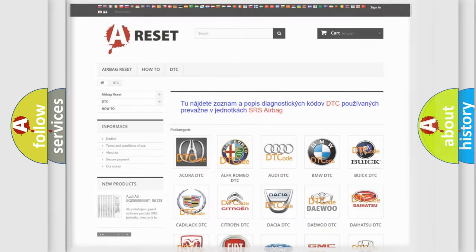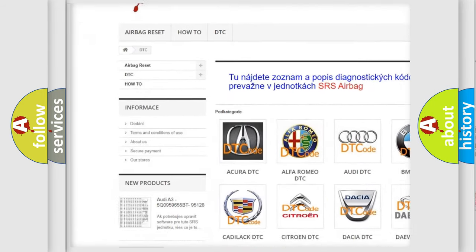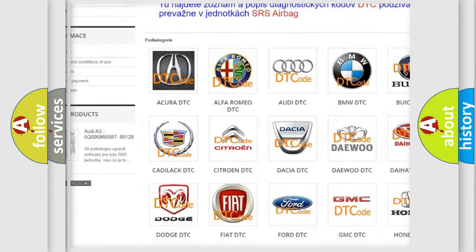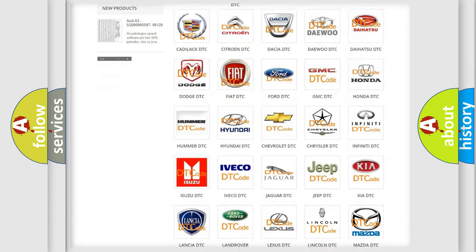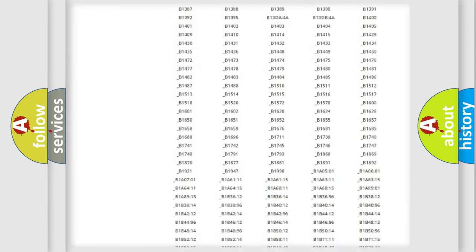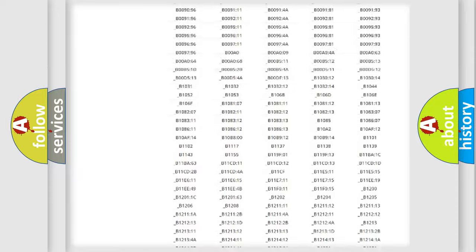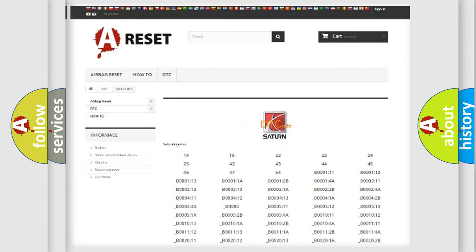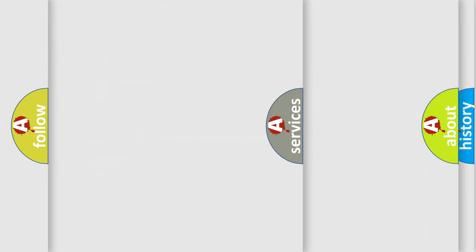Our website airbagreset.sk produces useful videos for you. You do not have to go through the OBD2 protocol anymore to know how to troubleshoot any car breakdown. You will find all the diagnostic codes that can be diagnosed in Saturn vehicles, and also many other useful things.